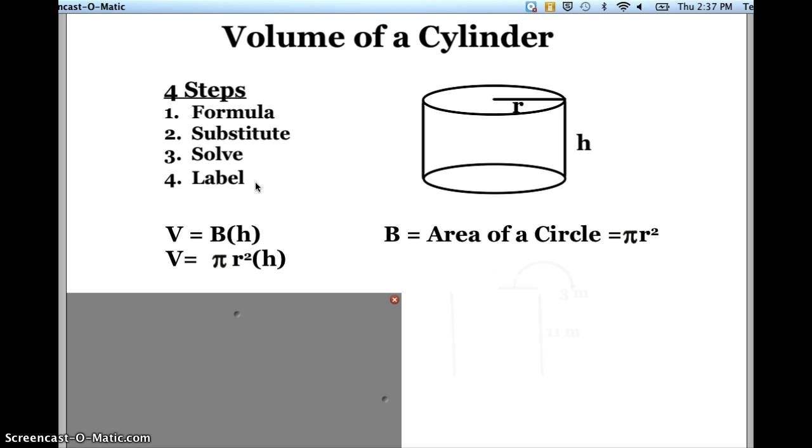Now when you take the MCA test in the spring, what you're going to get is the formula sheet. And the formula sheet for volume is going to say base times height or B times H. Now in a cylinder, the area of the base is just a circle.